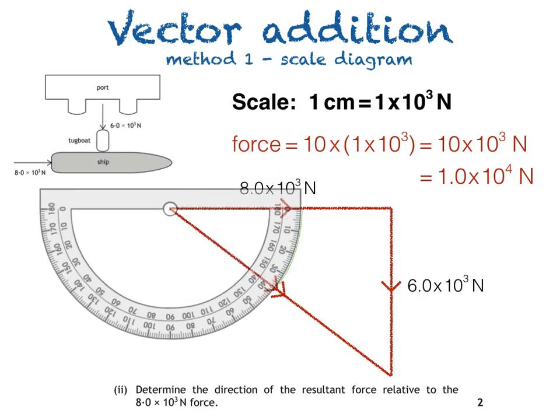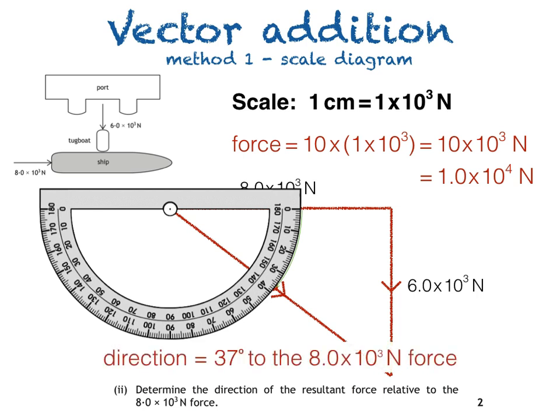When I turn the protractor around, you should see that the angle works out to be 37°. So the direction is 37° to the 8.0 × 10³ N force.